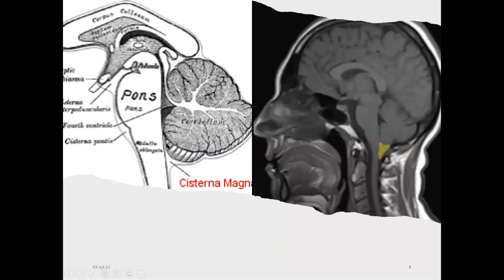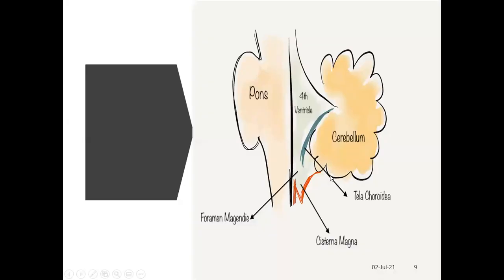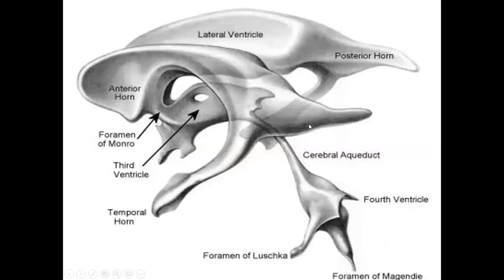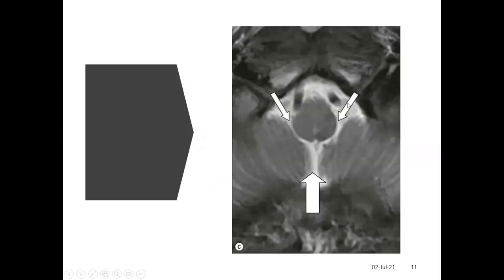The cisterna magna is the space between the posterior surface of the medulla and the anterior surface of the cerebellum. Here you can see the foramen of Magendie, the floor and roof of the fourth ventricle, the foramen of Luschka (lateral), and the foramen of Magendie (central), with the two foramina of Luschka on each side.